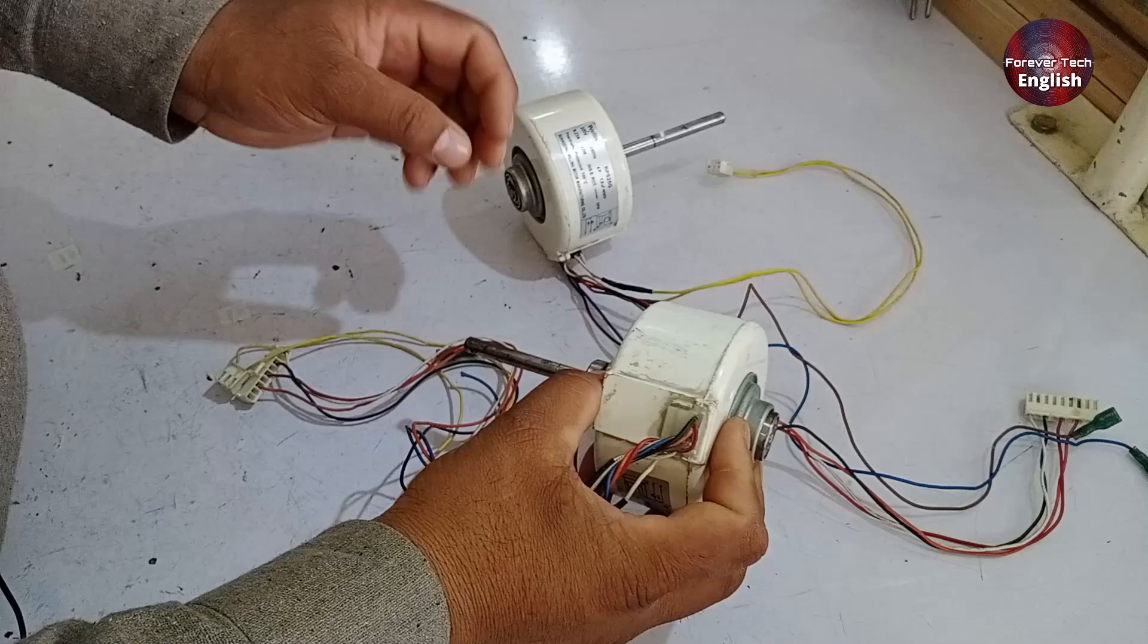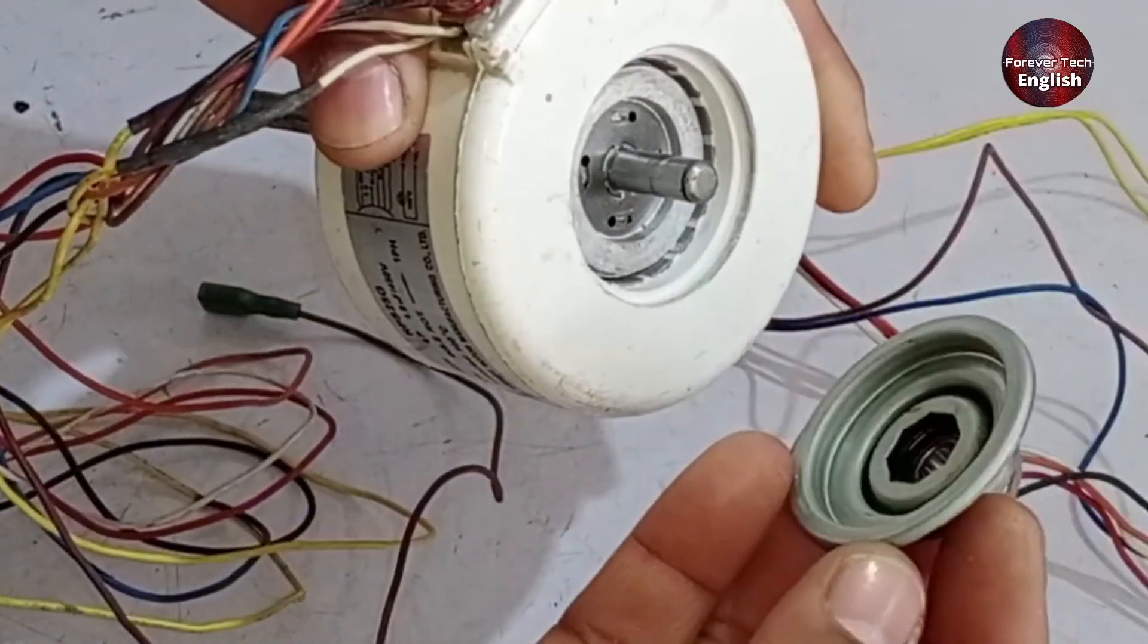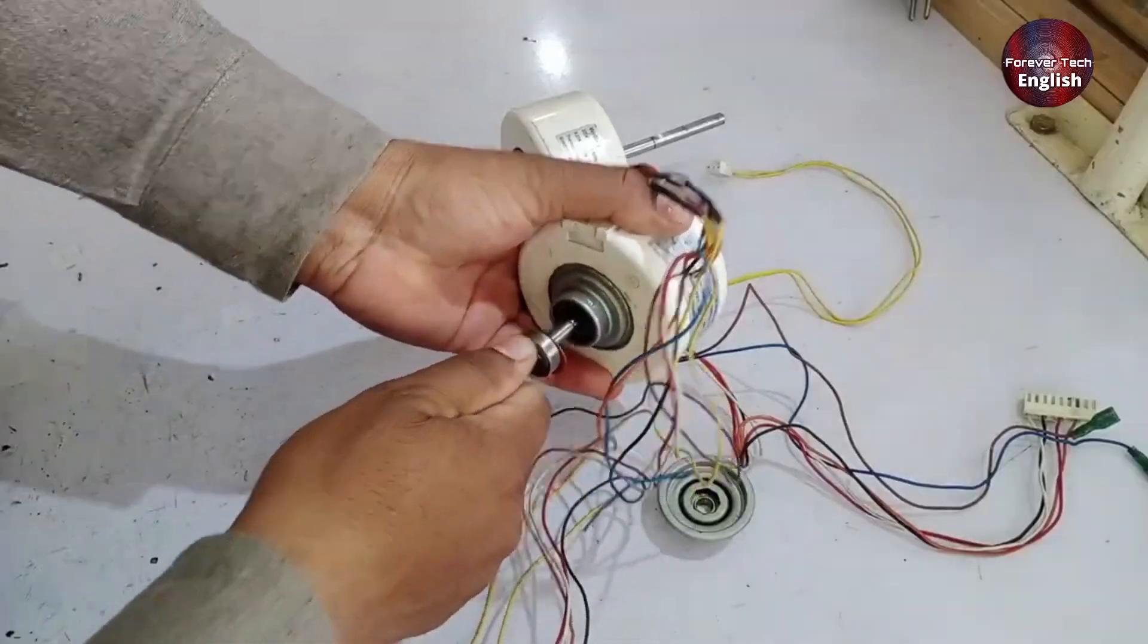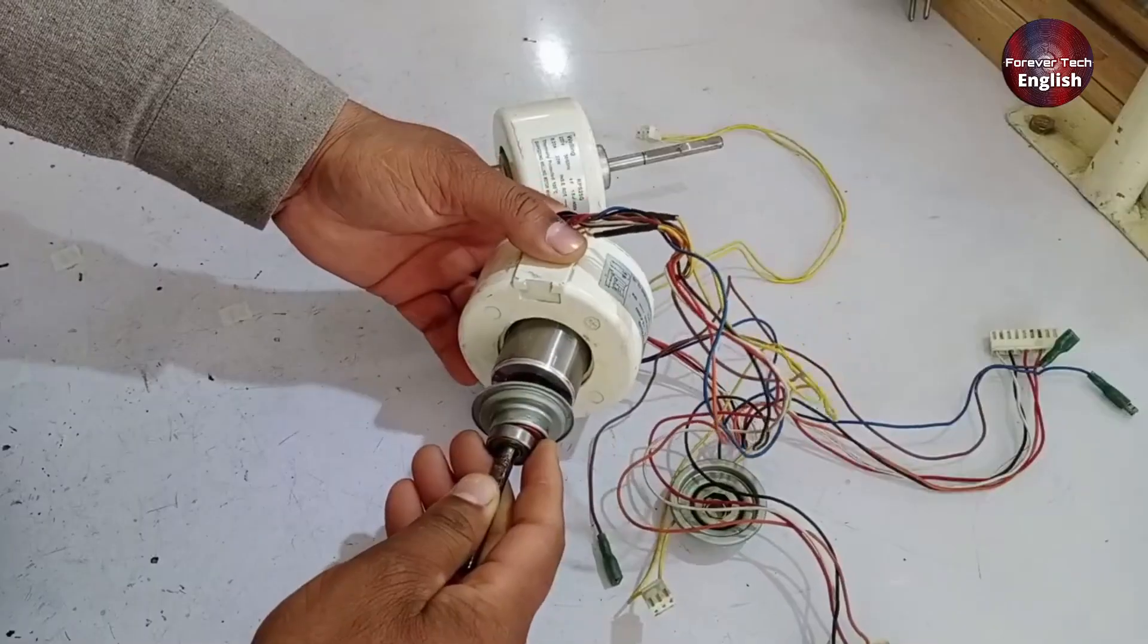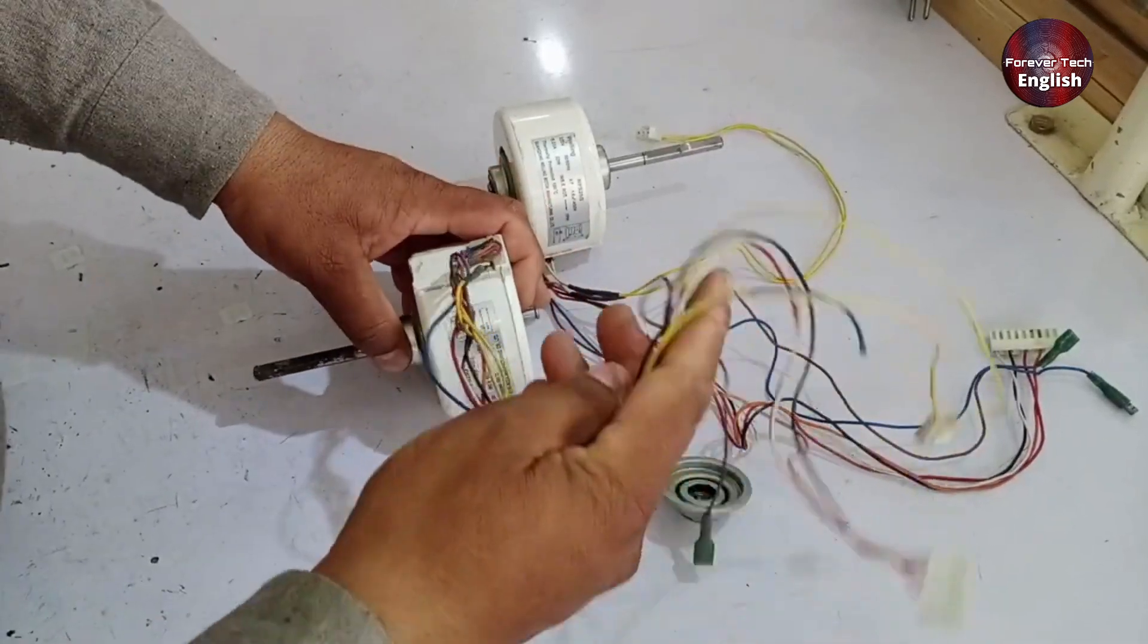I have another motor here, which I've already opened to save time. Look at the back side, there's no electronic circuit here. On the front side, you can see that there's only a rotor and coil, and nothing else to control its speed. The speed is controlled through these wires.